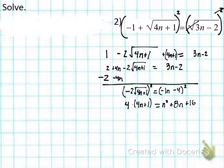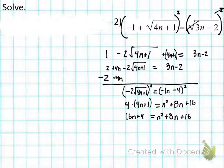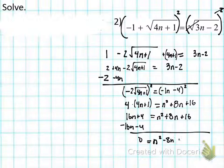Distribute the 4: 4 × 4n = 16n, 4 × 1 = 4. So we have 16n + 4 = n² + 8n + 16. Combining like terms and moving everything over, we get a trinomial. Solving, we get n = 6 and n = 2.